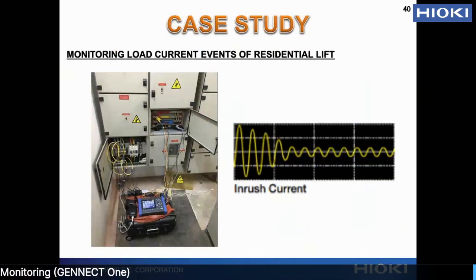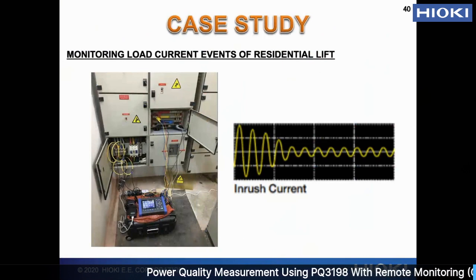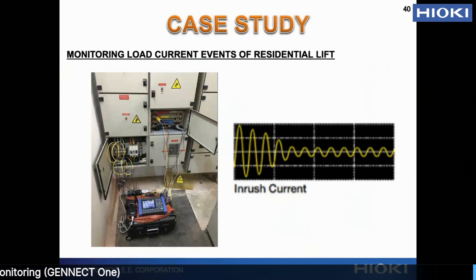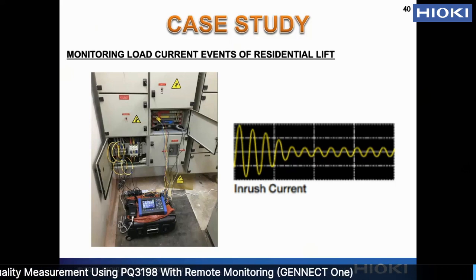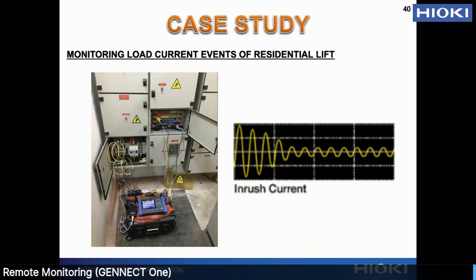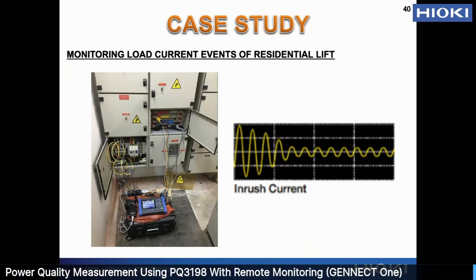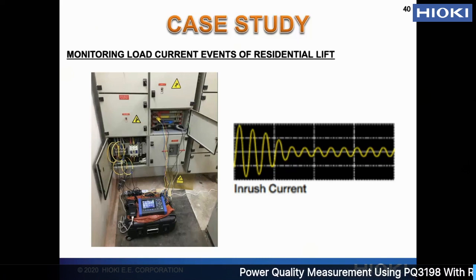I also have a customer who was asked to investigate tripping for a residential lift. The lift always had tripping occurring and they were not sure of the cause. The contractor brought the PQA down, hooked it up, and was able to identify that there was a fault in the motor — when the lift was moving, the motor caused an inrush current, tripping the circuit breaker on the switchboard and causing the lift to stop. The PQA was very helpful in quickly identifying the cause of the trip.